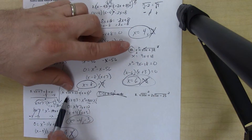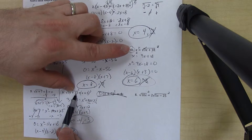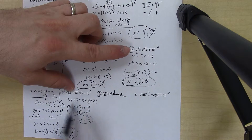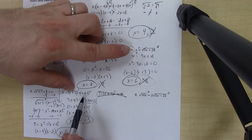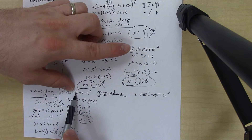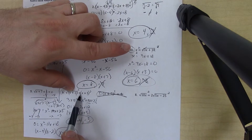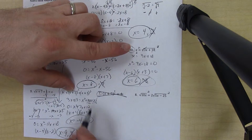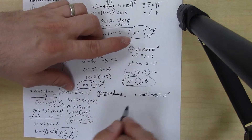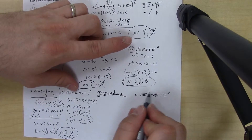Checking problem 5c: plugging in negative four gives negative twelve plus thirteen is one, and negative four plus five is one — that works. Plugging in negative nine: negative nine plus thirteen is four, square root of four is two, and negative three plus five is two — they both work, so no solutions are extraneous here.